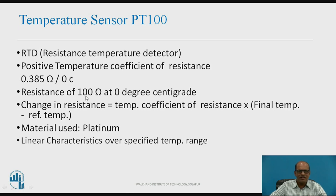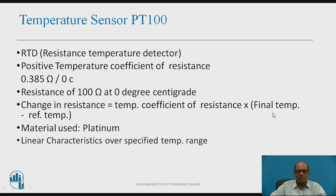The resistance of PT100 at 0 degree centigrade is 100 ohm and its resistance at 100 degree centigrade is 138.5 ohm. Using this temperature coefficient of resistance, we can calculate the change in resistance due to change in temperature. The formula is: change in resistance equals 0.385 ohms per degree centigrade multiplied by (final temperature minus reference temperature). The characteristics of PT100 are linear over the specified temperature range.